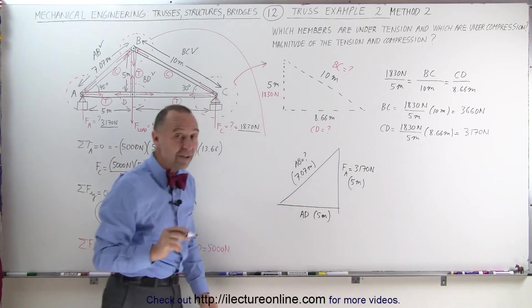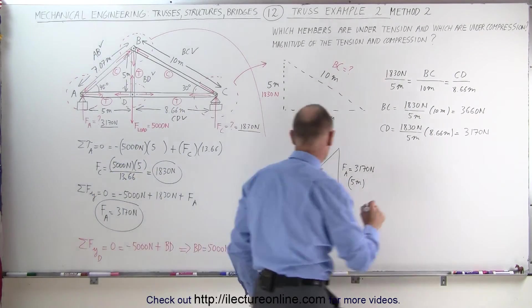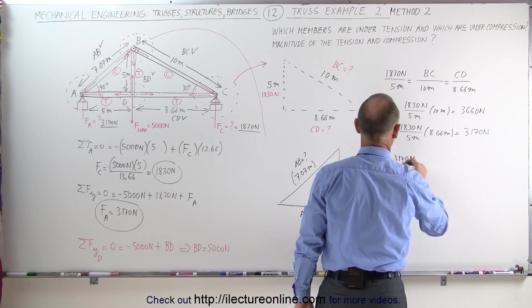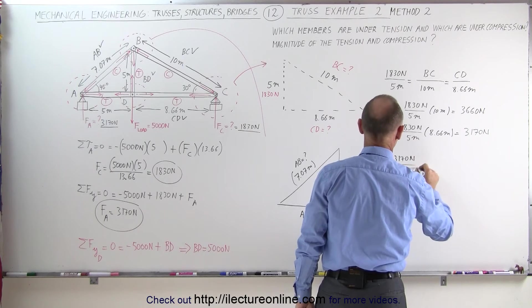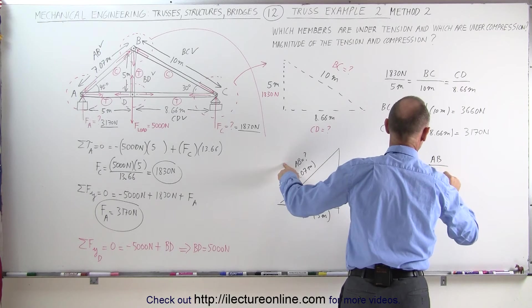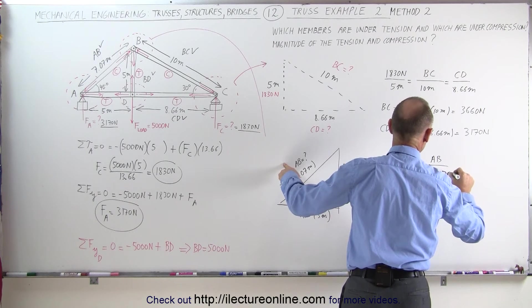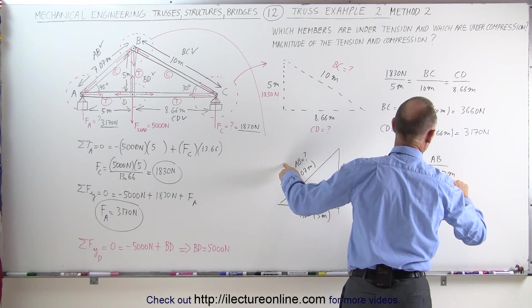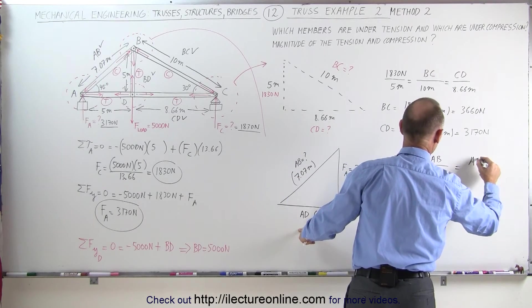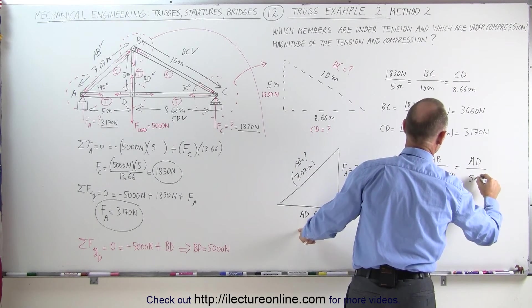In the exact same fashion we can find the force on those beams. We can write that 3170 newtons divided by 5 meters is equal to AB divided by 7.07 meters, which is equal to AD divided by 5 meters.